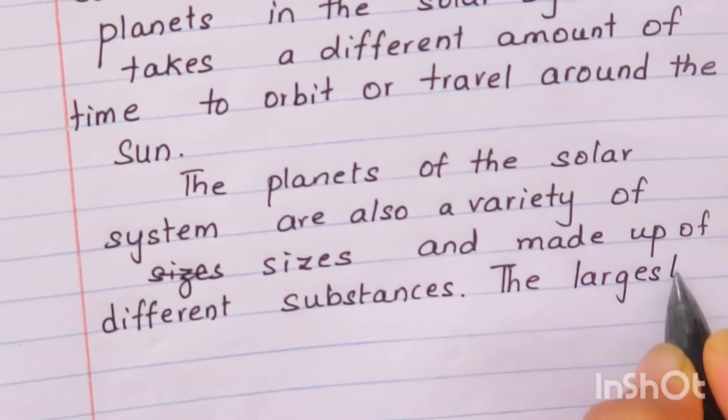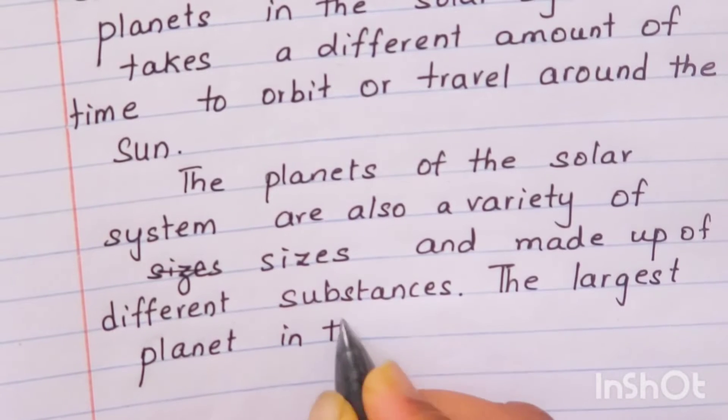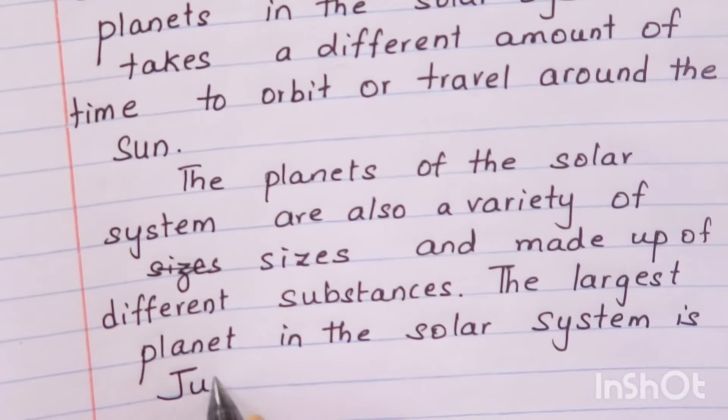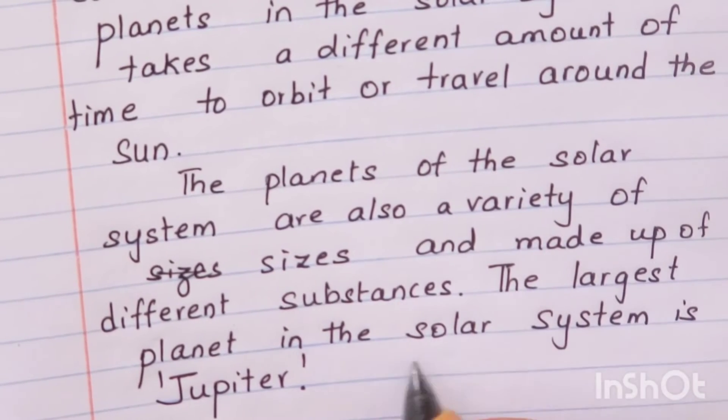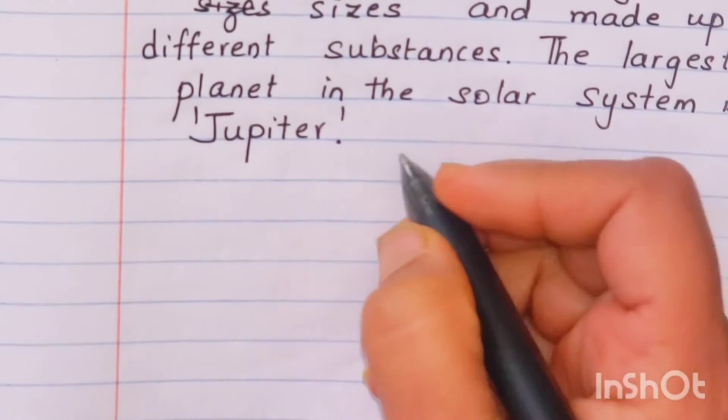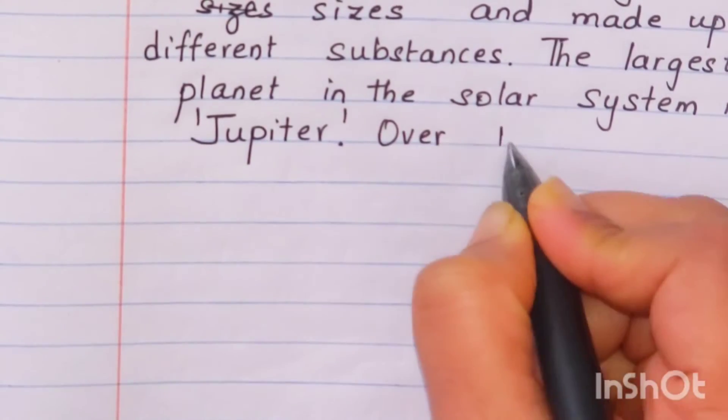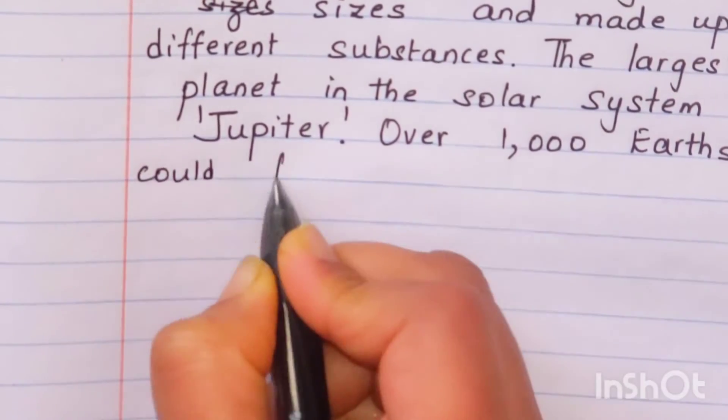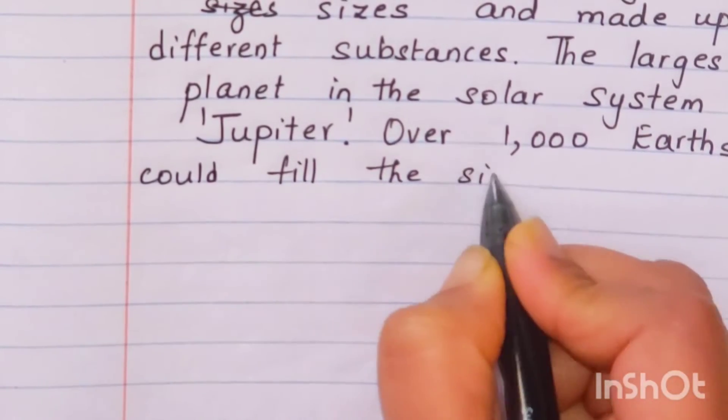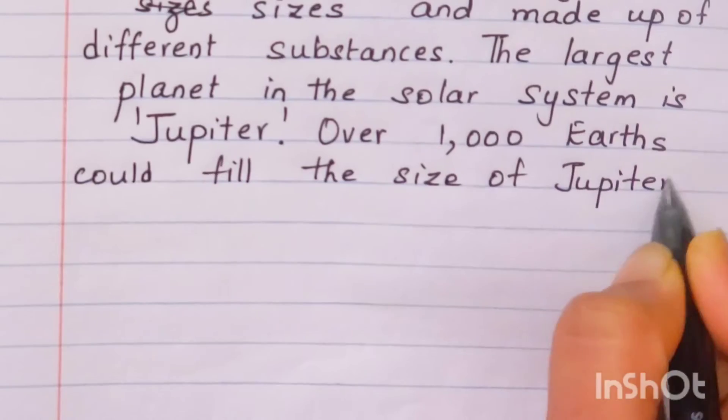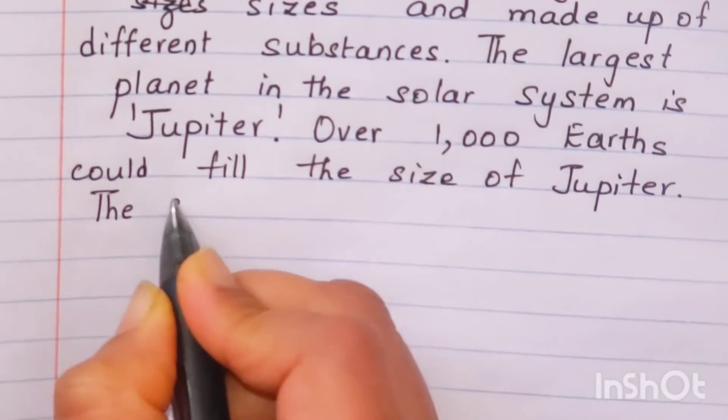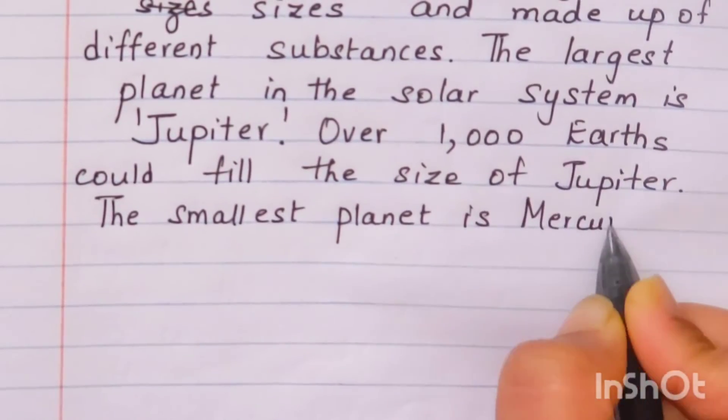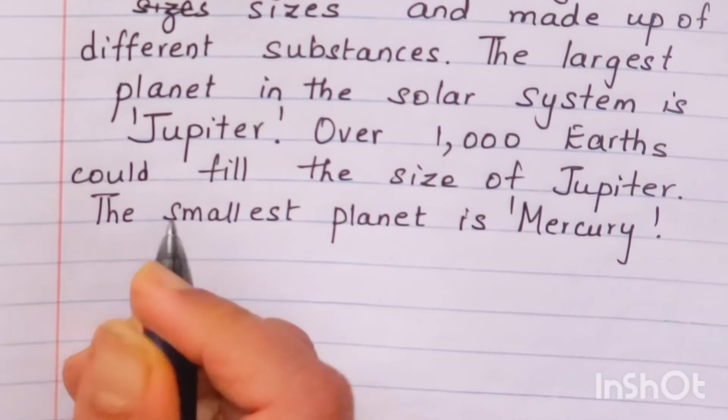The largest planet in the solar system is Jupiter. Among 8 planets, Jupiter is the biggest of all planets. Over 1000 earths could fill the size of Jupiter.